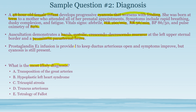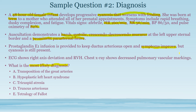Prostaglandin E1 keeps the PDA open and symptoms improve, meaning venous blood is still reaching the left side of systemic circulation. EKG shows right axis deviation and right ventricular hypertrophy, confirming the right side of the heart is enlarged, along with decreased pulmonary vascular markings on chest X-ray.